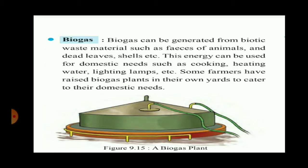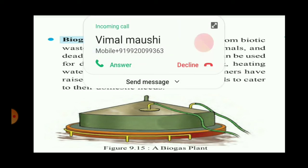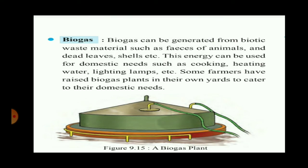Biogas plants, often seen in villages and supported by government subsidies, use cow dung, animal and human waste, dried leaves, shells, and wet household garbage. Bacteria present in the cow dung decompose this waste material and generate biogas. This energy can be used for domestic purposes — cooking, heating water, and lighting lamps — fulfilling small-scale domestic energy needs.